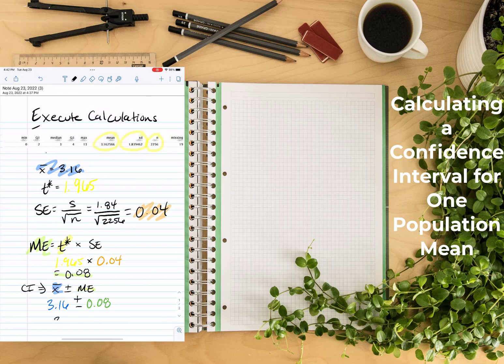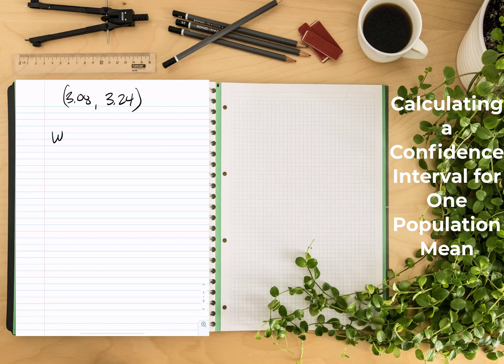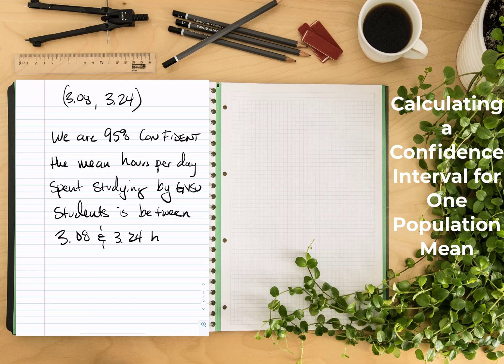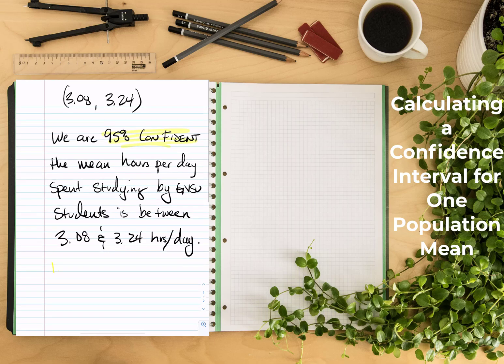So now that we've gotten our lower and upper bounds, the next thing that we'll do in our FRED is going to be drawing conclusions. And remember, we always start with how confident we are. So here we say we're 95% confident. Then we state our parameter. Here's the mean hours per day spent studying by GVSU students. And because there I stated my units, I don't actually have to state it at the end, but I'm going to. So we are 95% confident the mean hours of studying per day by GVSU students is between 3.08 and 3.24 hours per day.